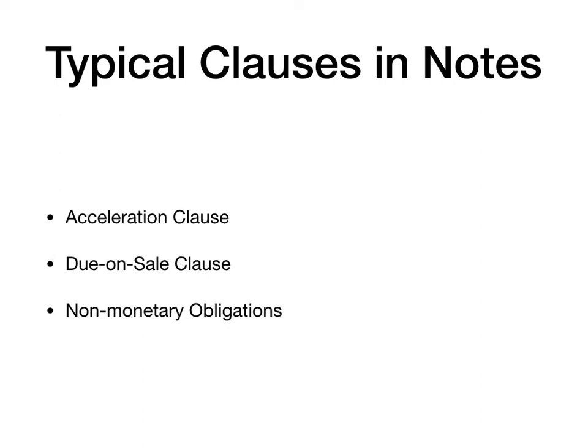A due-on-sale clause is a clause in the promissory note that requires that if the property is sold, the full remaining loan amount is due on the sale of the property. There are also typically some non-monetary obligations included in notes — for example, requirements that the maker not waste or cause damage to the property, or that they carry homeowner's insurance.